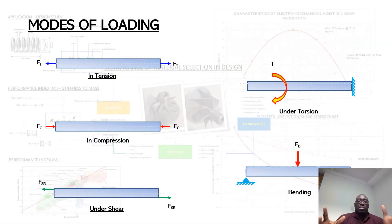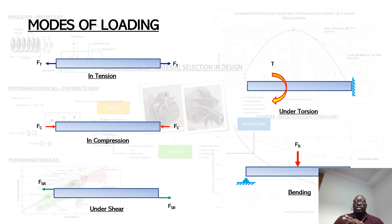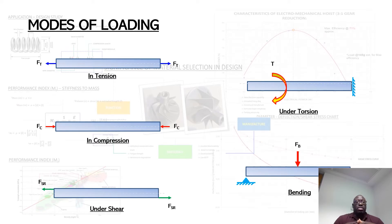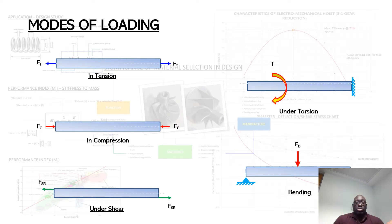For us to understand how materials are subjected to what's called stress, we can look at the typical modes of loading typically in mechanical systems, depending on how a component is constrained in terms of its manner of operation, or the nature to which a component is interacting with another component. So these are typical examples of how engineering components can be loaded.